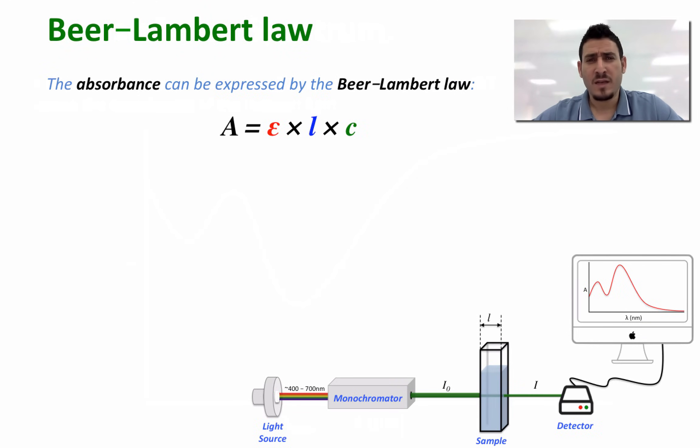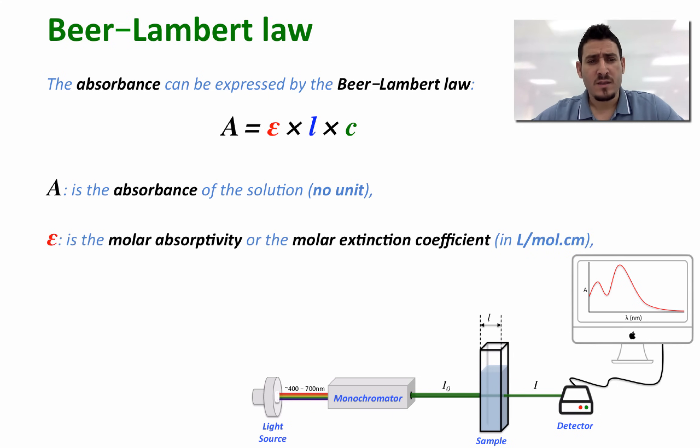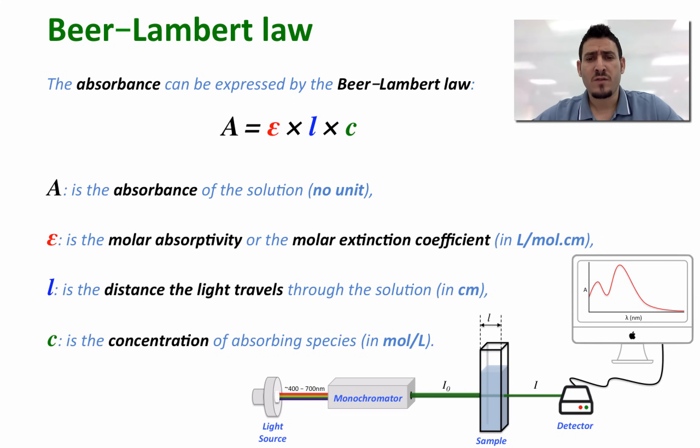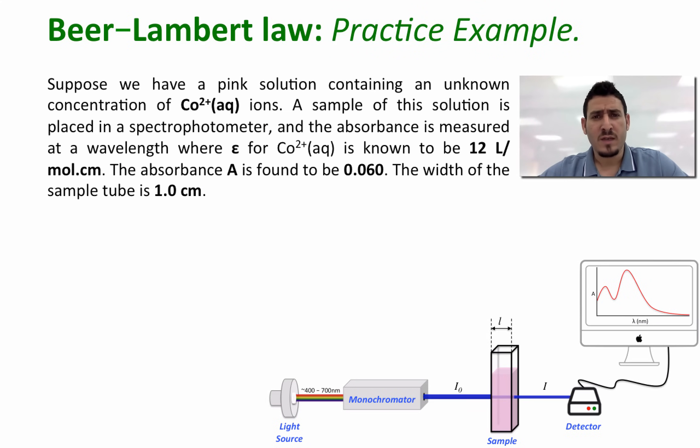Now let's define the Beer-Lambert law. The absorbance can be expressed by Beer-Lambert's law as follows: A equals epsilon multiplied by l multiplied by c, where A is the absorbance of the solution and there's no unit for A. Epsilon is the molar absorptivity or the molar extinction coefficient and it's measured in liter per mole centimeter. l is the distance the light travels through the solution and it's measured in centimeters. And c is the concentration of the absorbing species and it's measured in mole per liter. Now let's practice the Beer-Lambert law.